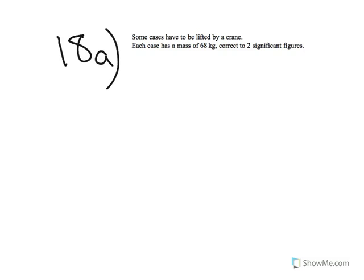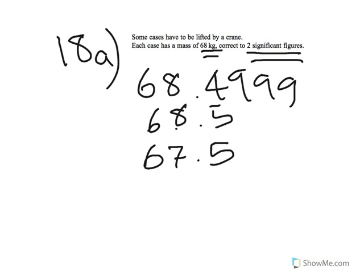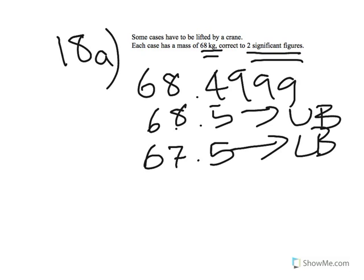In 18A, you're being asked to write the upper bound of the mass of the case. The mass of the case is 68 kg, correct to two significant figures. If you think about these two significant figures, it could have been 68.4999 rounded down, or 68.5 rounded down, or 67.5 rounded up. So 67.5 is the lower bound, and 68.5 is the upper bound.